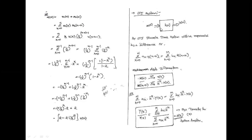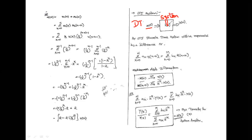The last topic here is the linear time invariant system. The discrete time signal X(n) is given to the system. That system is a linear time invariant system H, and the response is Y — the output. The discrete time system will be represented by the difference equation.